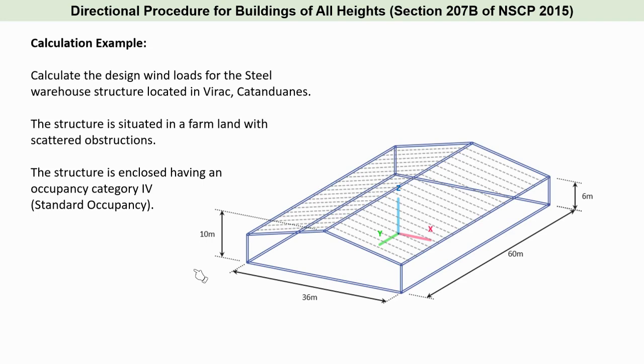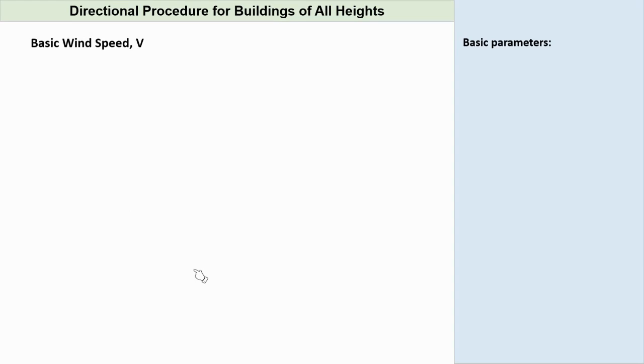Calculation example. Calculate the design wind loads for the steel warehouse structure located in Virac, Catanduanes. The structure is situated in a farmland with scattered obstructions. The structure is enclosed having an occupancy category 4, which is a standard occupancy.